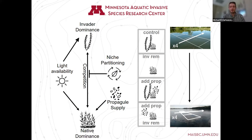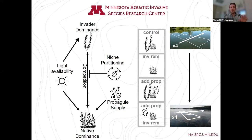I promised to unpack propagule supply. When we talk about propagule supply for native plants, we need to consider that aquatic plants have two primary modes of reproduction: first, producing seed; and second, producing vegetative propagules. Some of you may be familiar with the term turion — a specialized structure that allows vegetative reproduction found in many of our pondweeds. I use 'propagule' because it encompasses both vegetative propagules and seed propagules that help these plants reproduce.